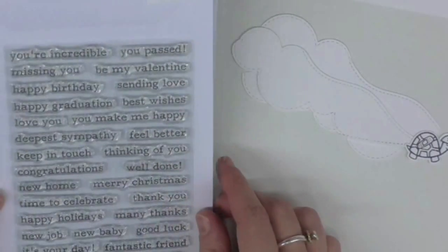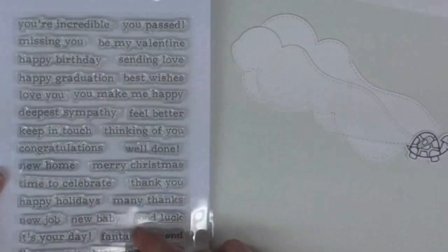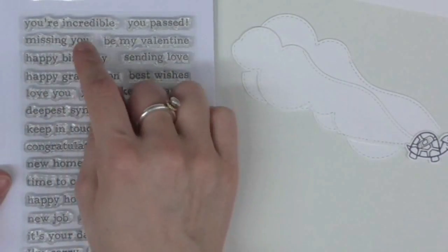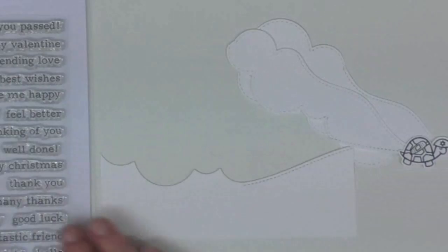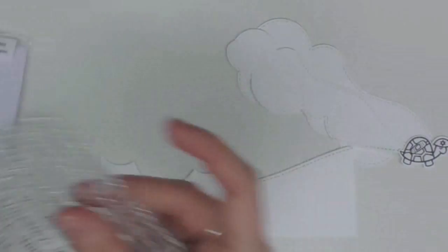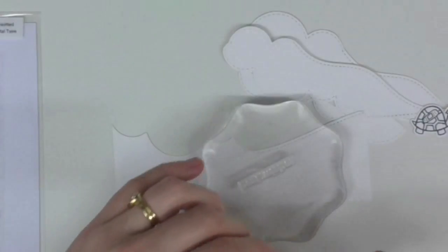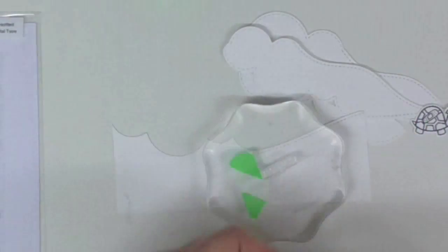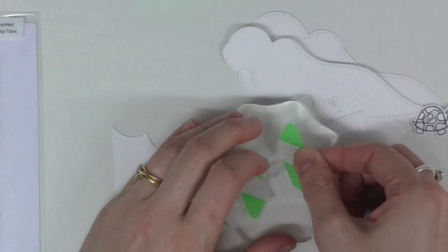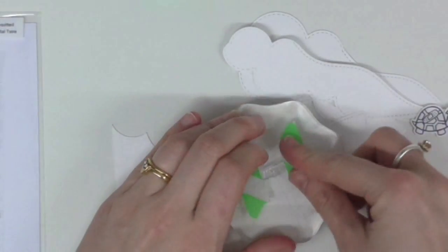Now I don't have a stamp that says wishing you, but I do have this stamp set which has best wishes missing you and then it says a little note at the bottom. So I can use the partial stamping technique by masking off some of the letters that I don't want using some washi tape, and I'm going to ink that up with some Versamark ink and emboss it.